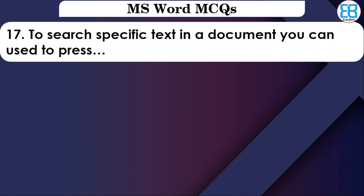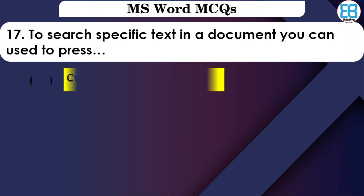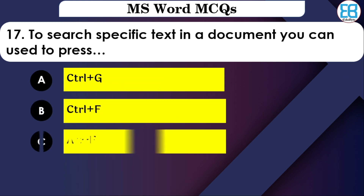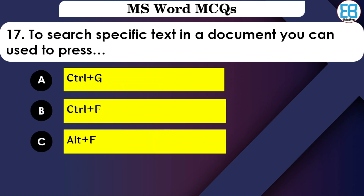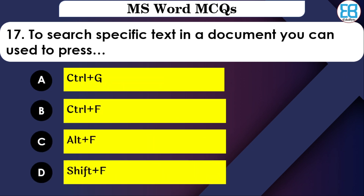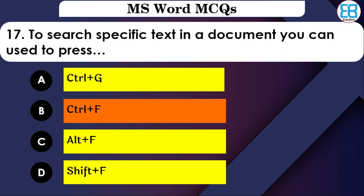To source or find specific text in a document, you can use which shortcut? The options are: Ctrl+F, Ctrl+RTF, or Shift. The correct option is Ctrl+F — press Ctrl+F to find specific text in a document.